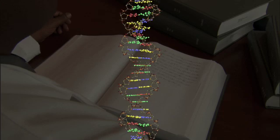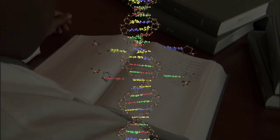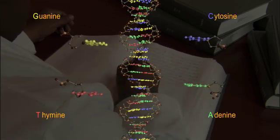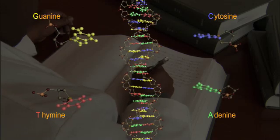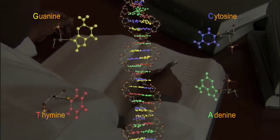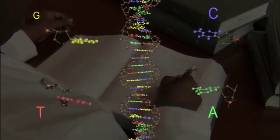These steps of the DNA ladder are composed of just four different molecules: adenine, thymine, cytosine, and guanine. And it is common to refer to them by their initials: A, T, C, G.